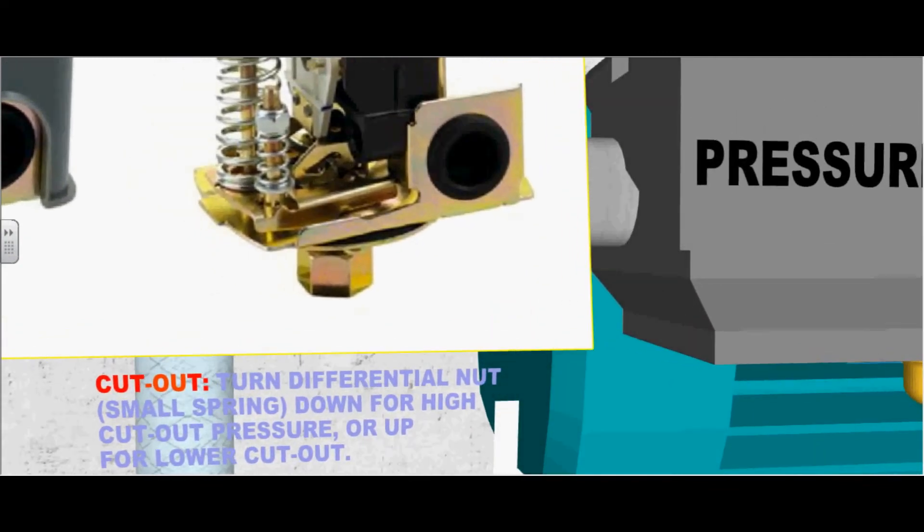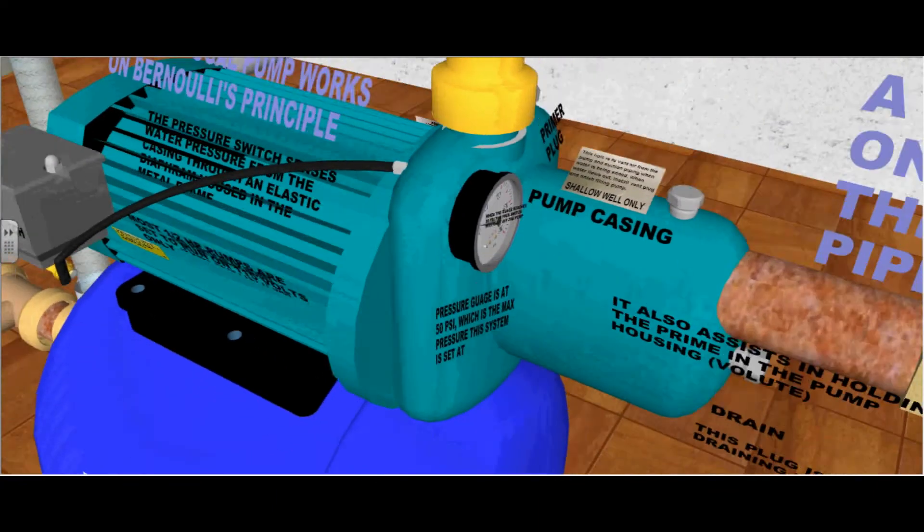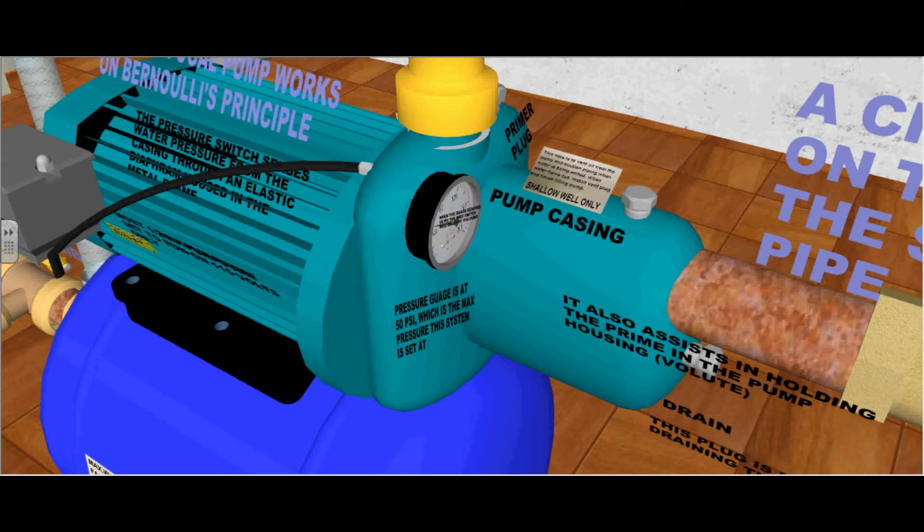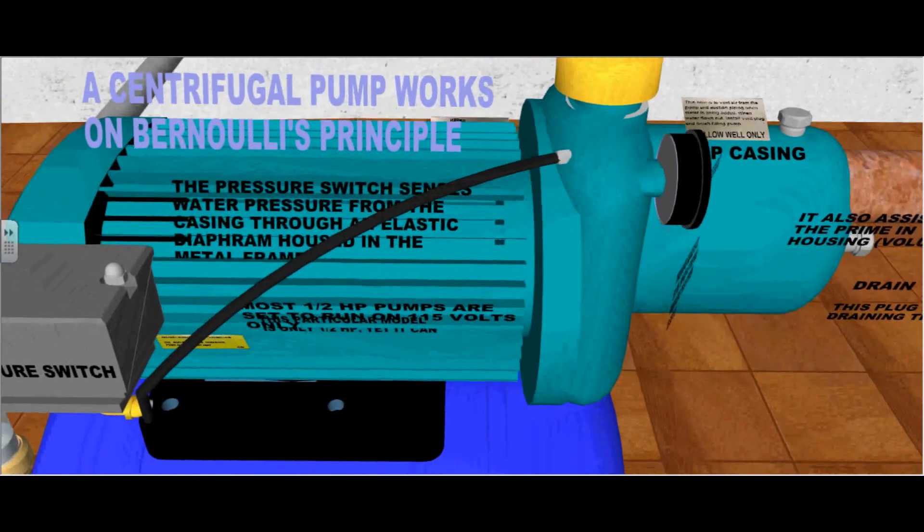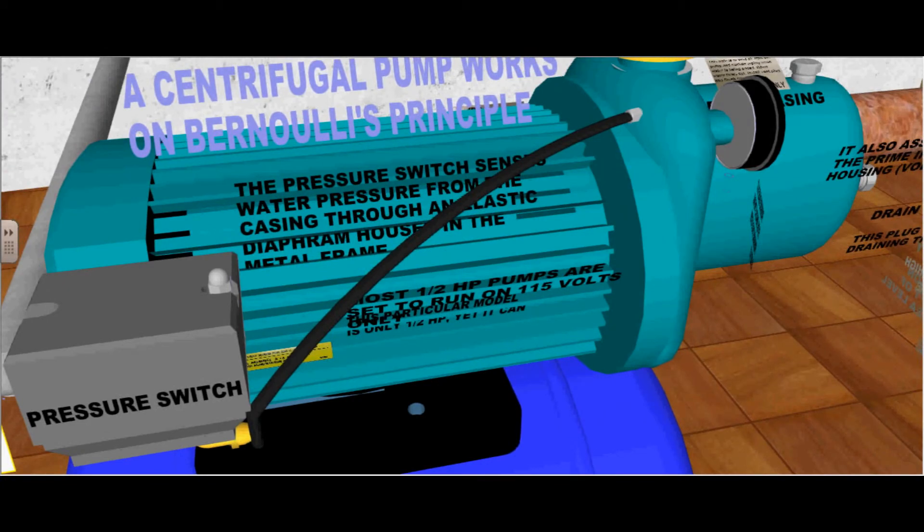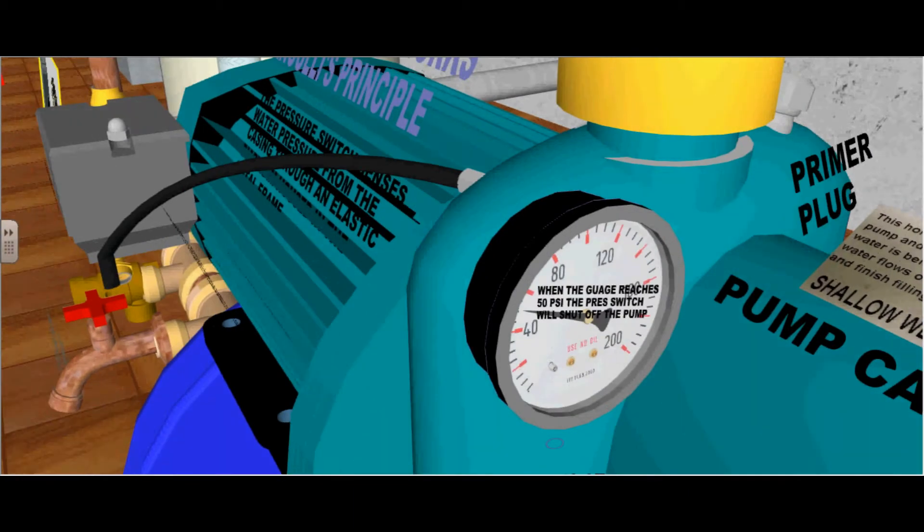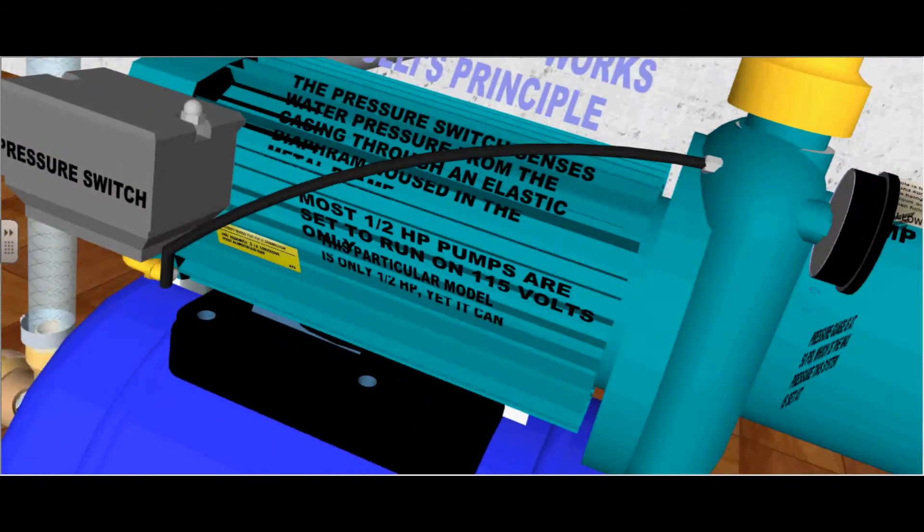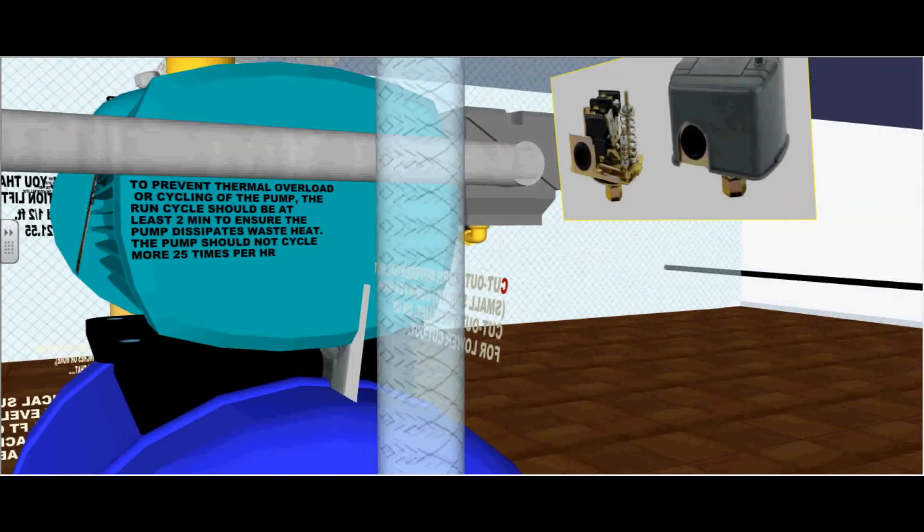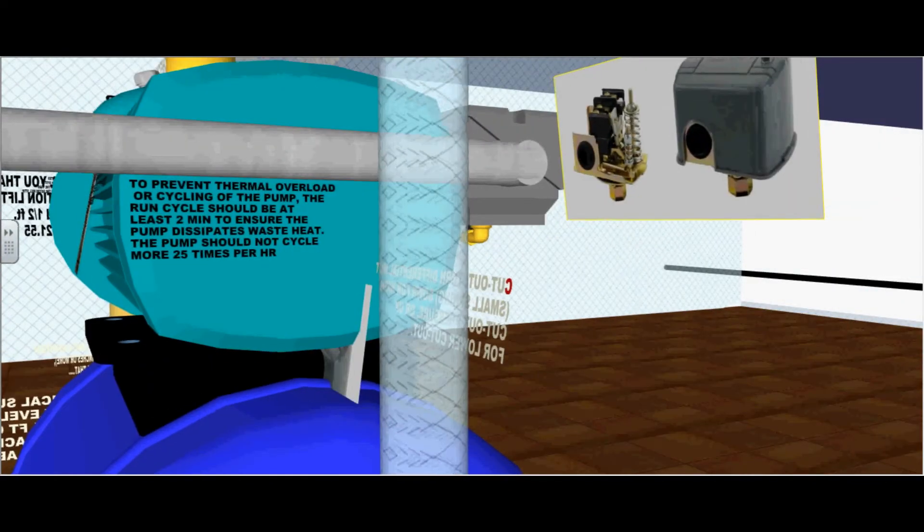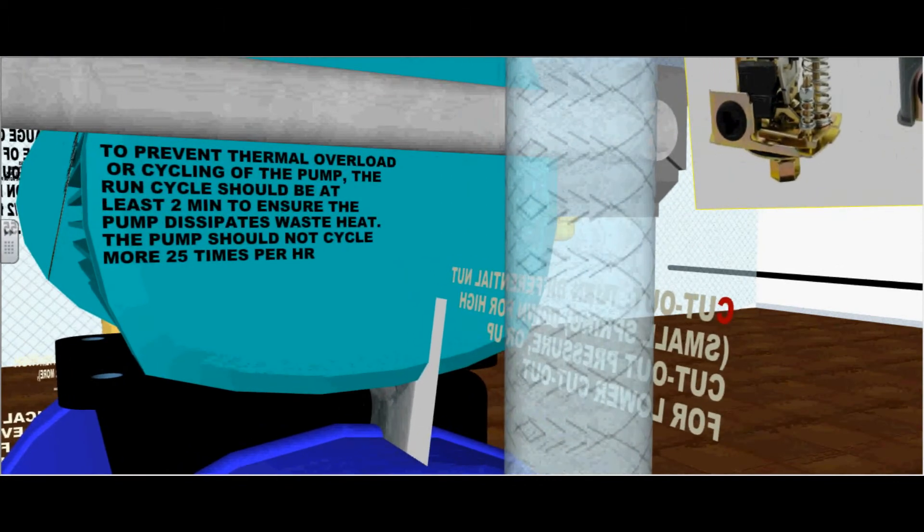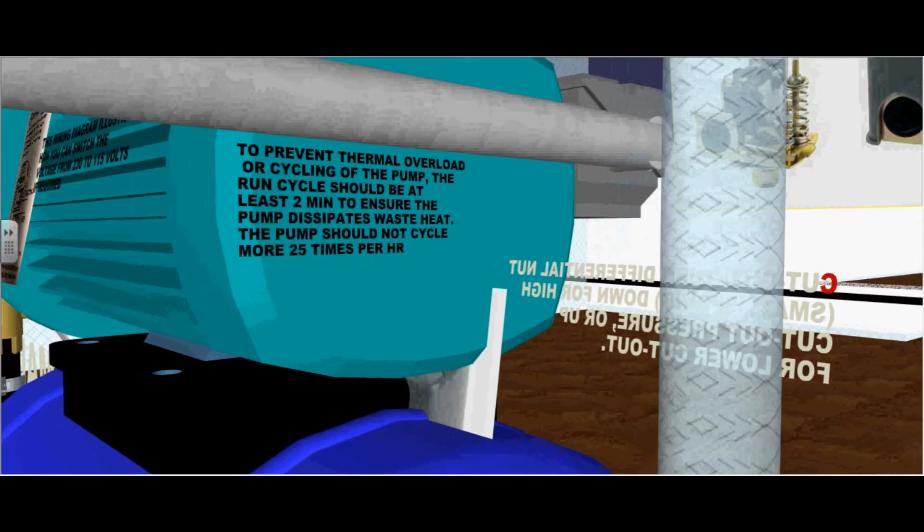This is how you adjust the pressure ranges of the pump. This pressure switch senses water pressure from the casing through an elastic diaphragm housed in the metal frame. When the gauge reaches 50 psi, the pressure switch should shut the pump off. To prevent thermal overload or cycling of the pump, the run cycle should be at least 2 minutes to ensure the pump dissipates the waste heat. The pump should not cycle more than 25 times per hour.